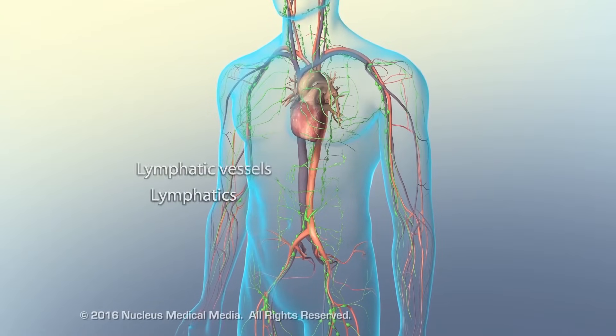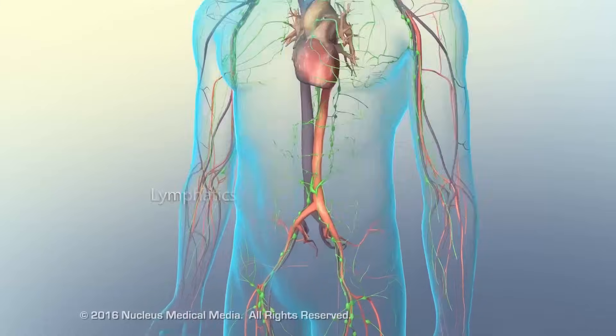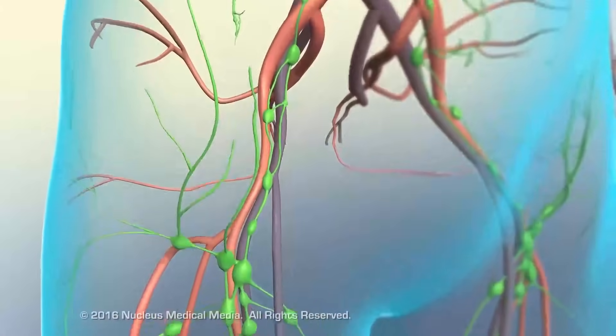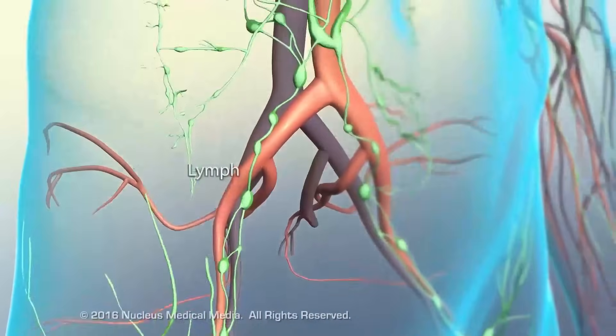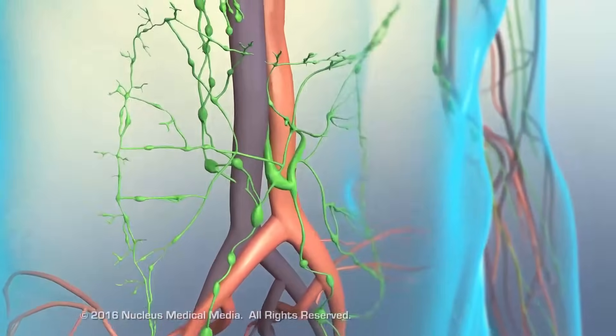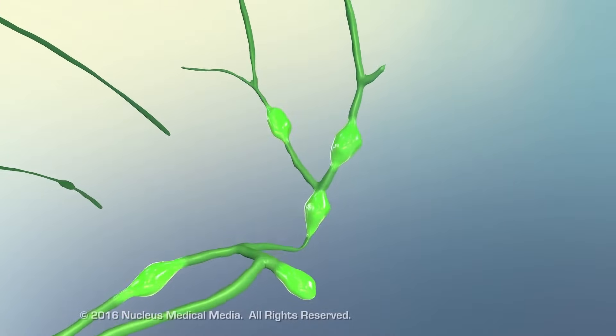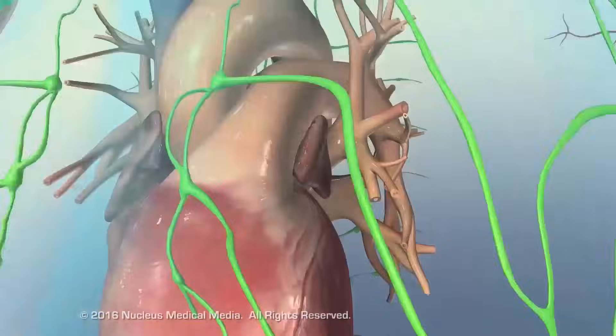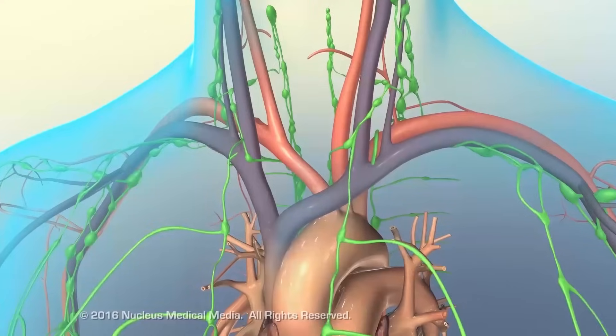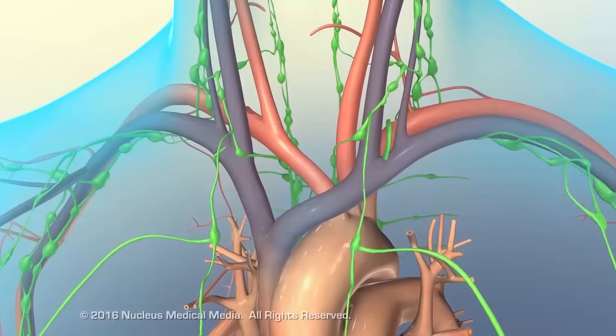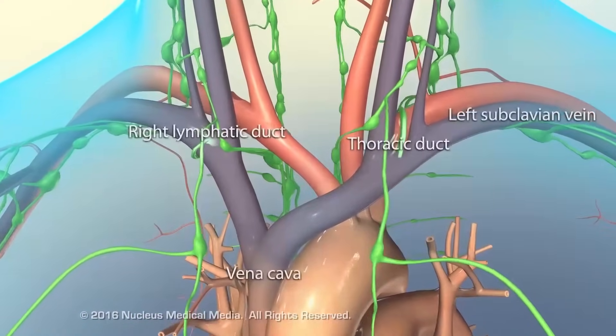Lymphatic vessels, also called lymphatics, carry a watery fluid known as lymph from body tissues, filter lymph through packets of lymphoid tissue called lymph nodes, and return it to the bloodstream through a series of larger vessels.